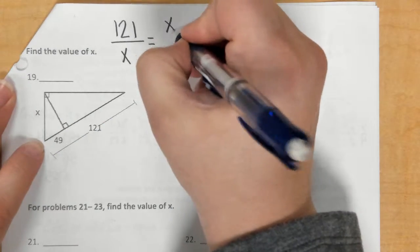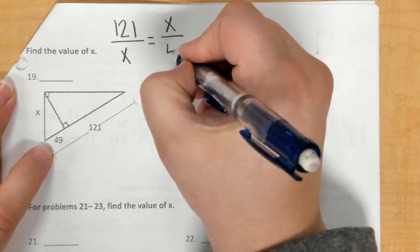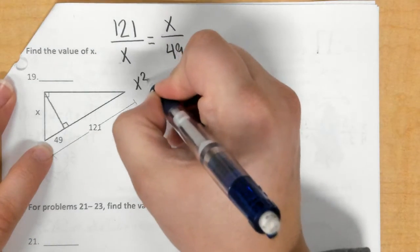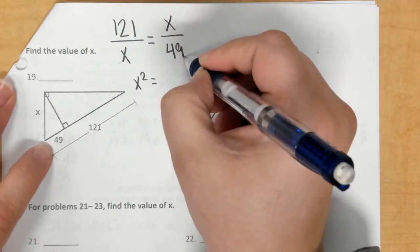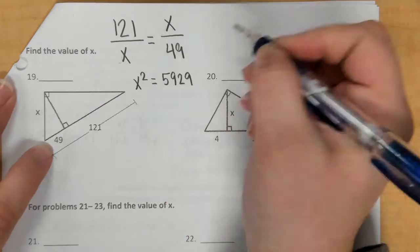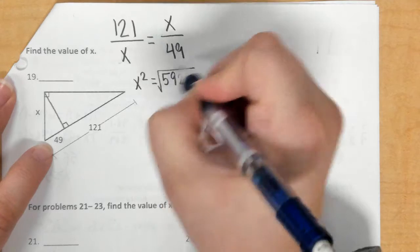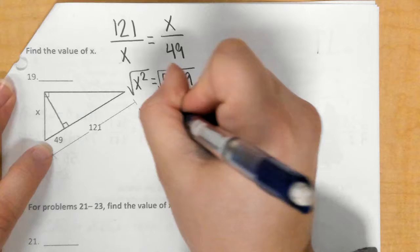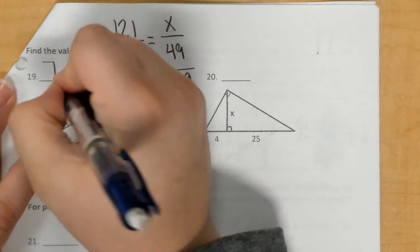Then x over 49, so x times x is x squared, and if I multiply the diagonal there, we get 5,929, and we take the square root of both sides. I would check that, and that is a perfect square, so it's 77 is x.